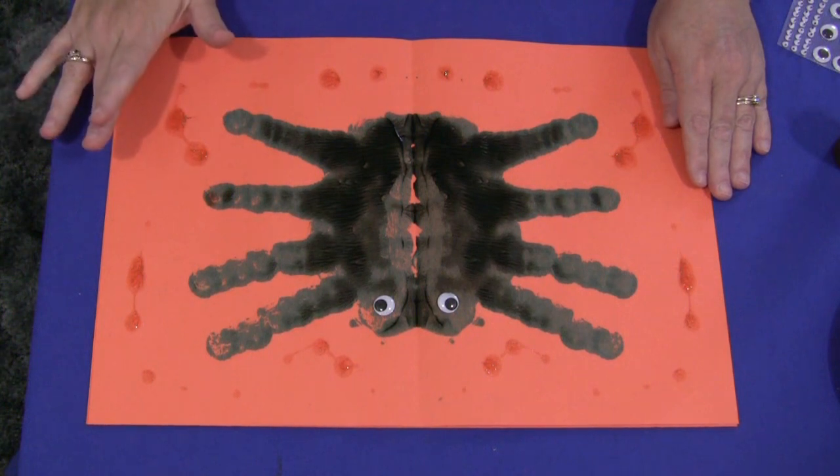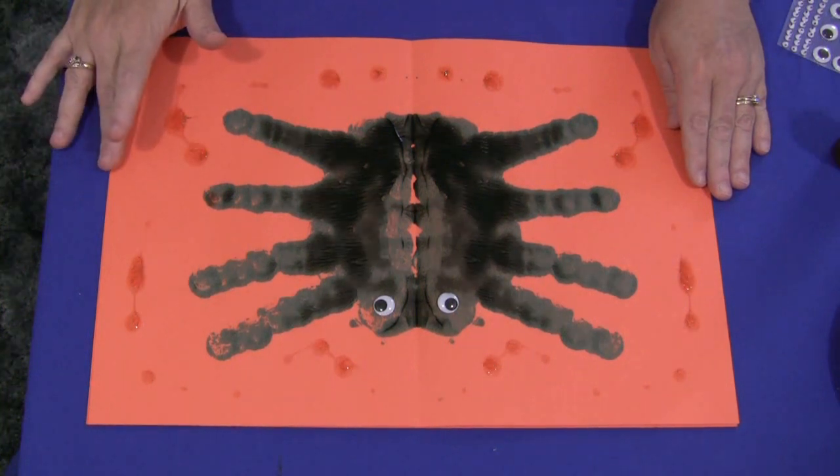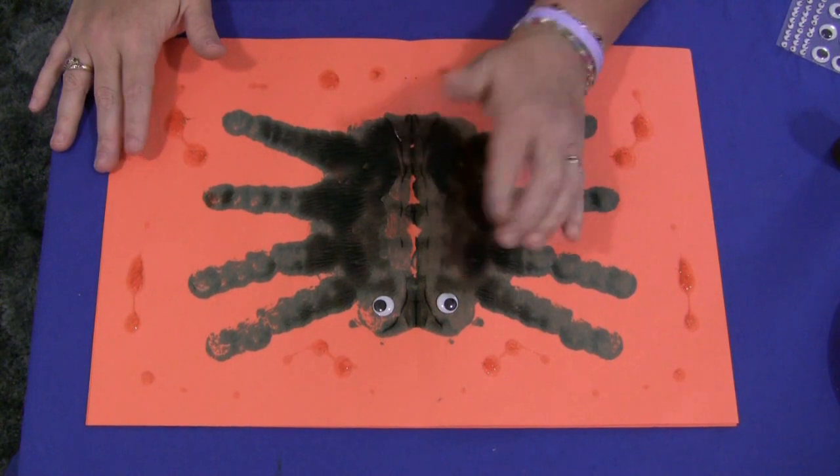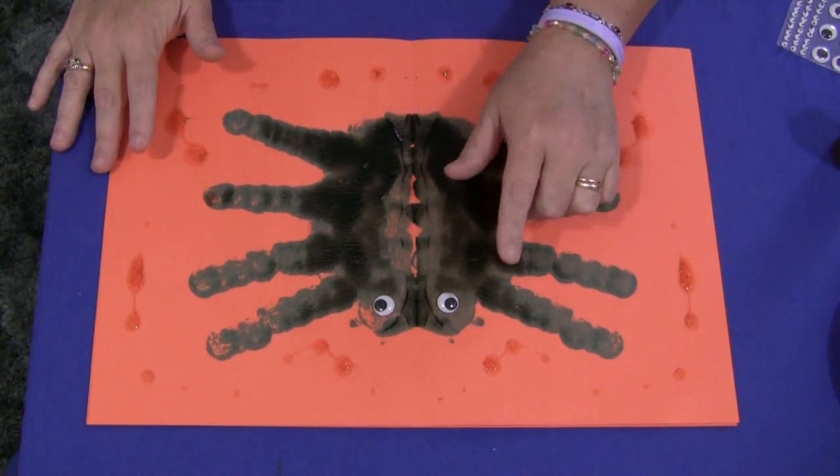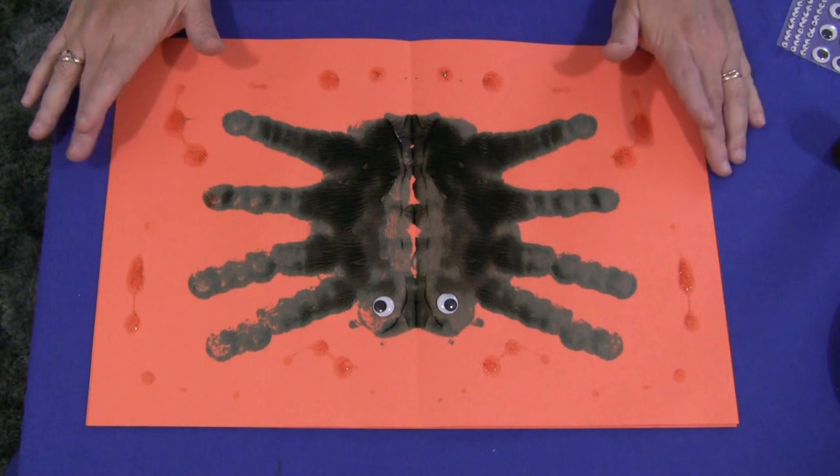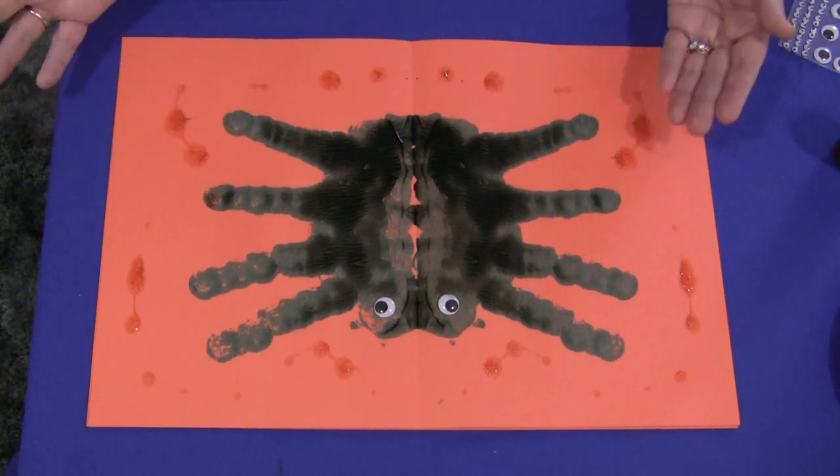You just need to have orange construction paper, black paint, and we have added wiggle eyes but you don't have to. And we've also added gold glitter glue on our project to make it sparkly, but you don't have to do that either.